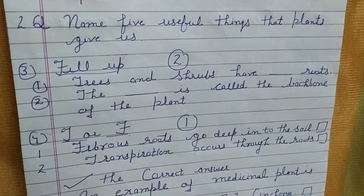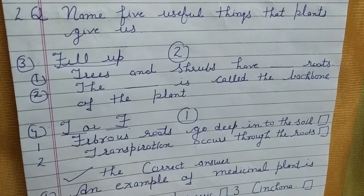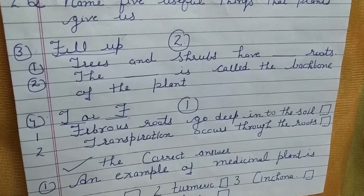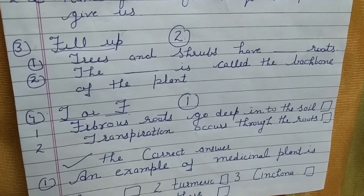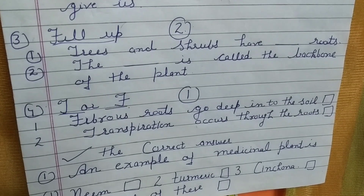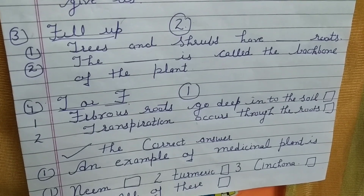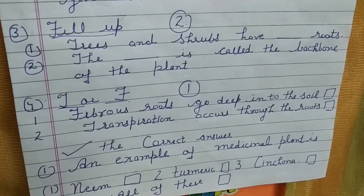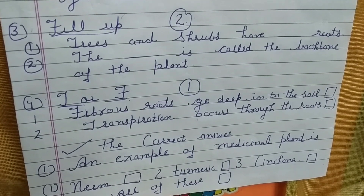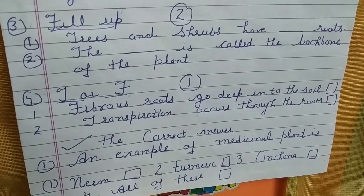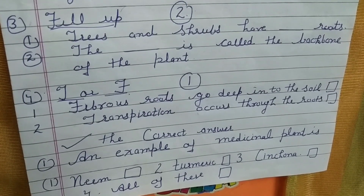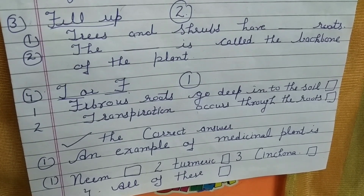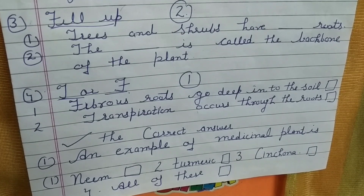Third question - Fill in the blanks. Number 1: Trees and shrubs have dash roots. Number 2: The dash is called the backbone of the plant.